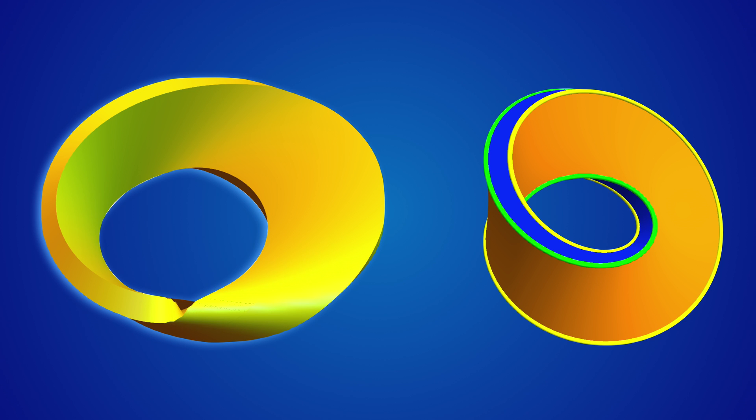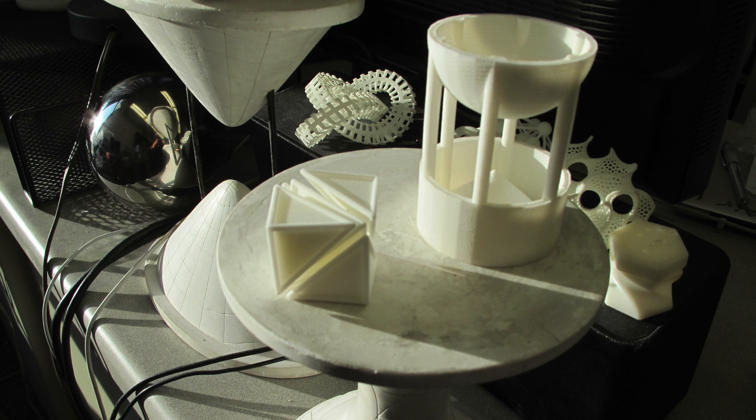Mathematica allows to do that also automatically by just specifying the thickness. But it obviously has here some problems in the case of the Möbius strip. Of course, it's not to blame as the strip is not orientable.